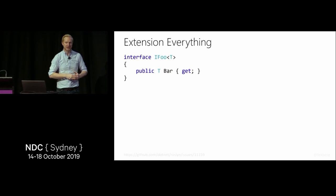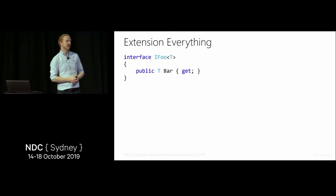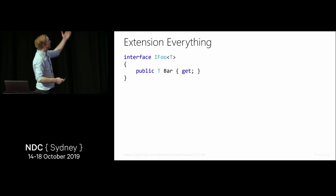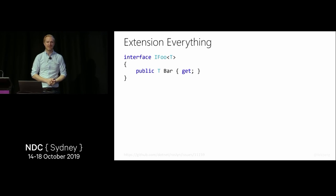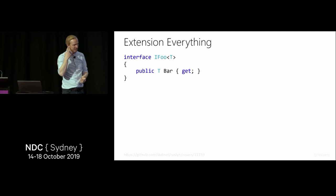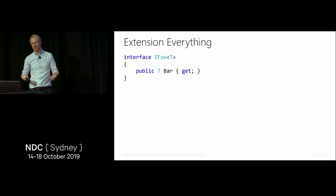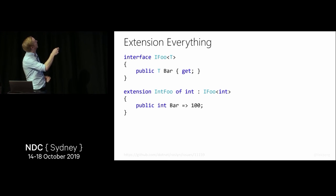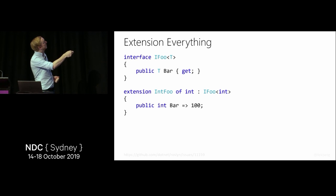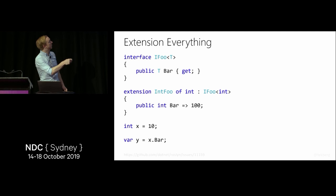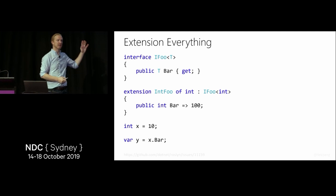Finally, one more feature: extension everything. One problem with extension methods in C# is we can't really extend things like integers or doubles that we don't own. Imagine having an interface with a bar property and allowing us to add it to an integer. With extension everything, you can say `extension IntFoo for int : IMyInterface` and implement the interface for integer. Inside the context of your application, you create a new integer, call x.bar, and it just works.